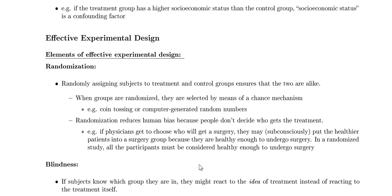Randomization reduces human bias because people don't get to decide who gets the treatment. For example, if physicians choose who gets a surgery, they may subconsciously put healthier patients into the surgery group because they're healthy enough to undergo surgery. That would bias the study — if only healthy people get the surgery, it makes the surgery seem more effective. In a randomized study, all participants must be considered healthy enough to begin with, and then people are randomly assigned to surgery or non-surgery groups.